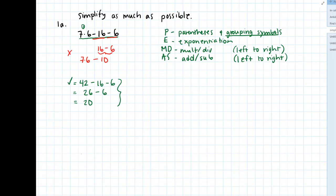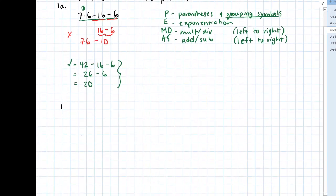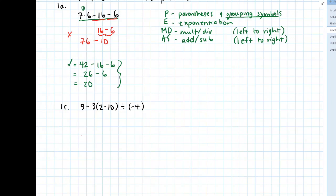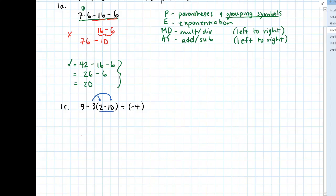The next example I want to go over is another order of operations problem. Here in 1C we're looking at 5 take away 3 times 2 minus 10 divided by negative 4. When we look at this problem, you might be familiar with this idea of distribution — we can distribute this negative 3 into the parentheses to the 2 minus 10. And that's fair.